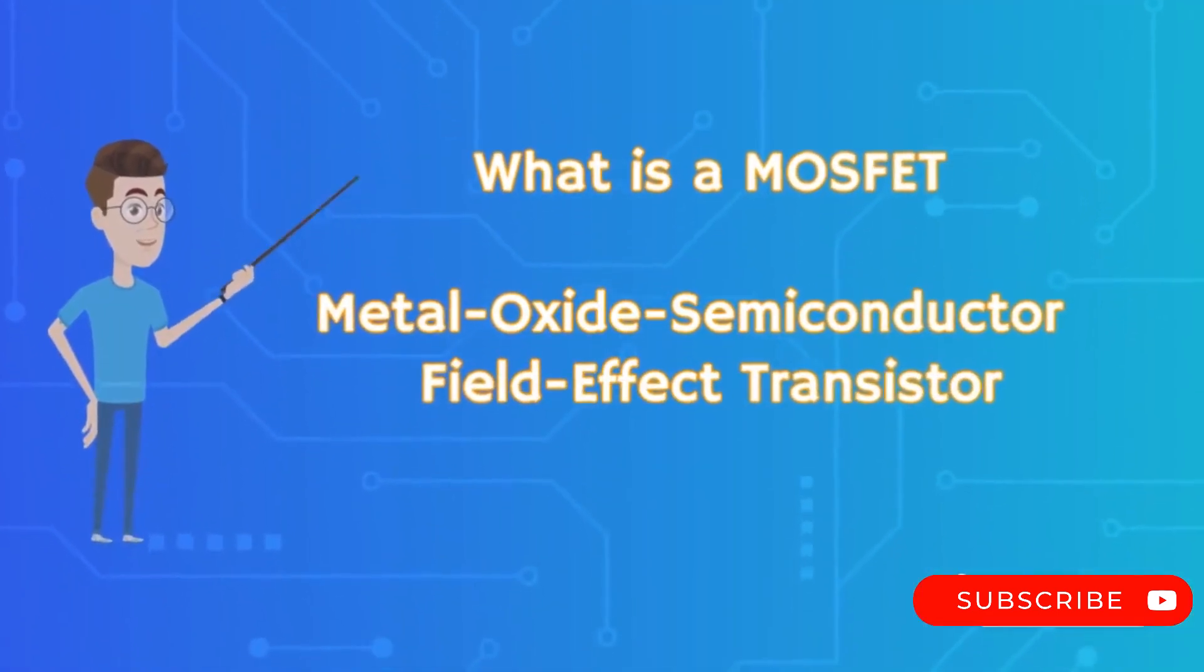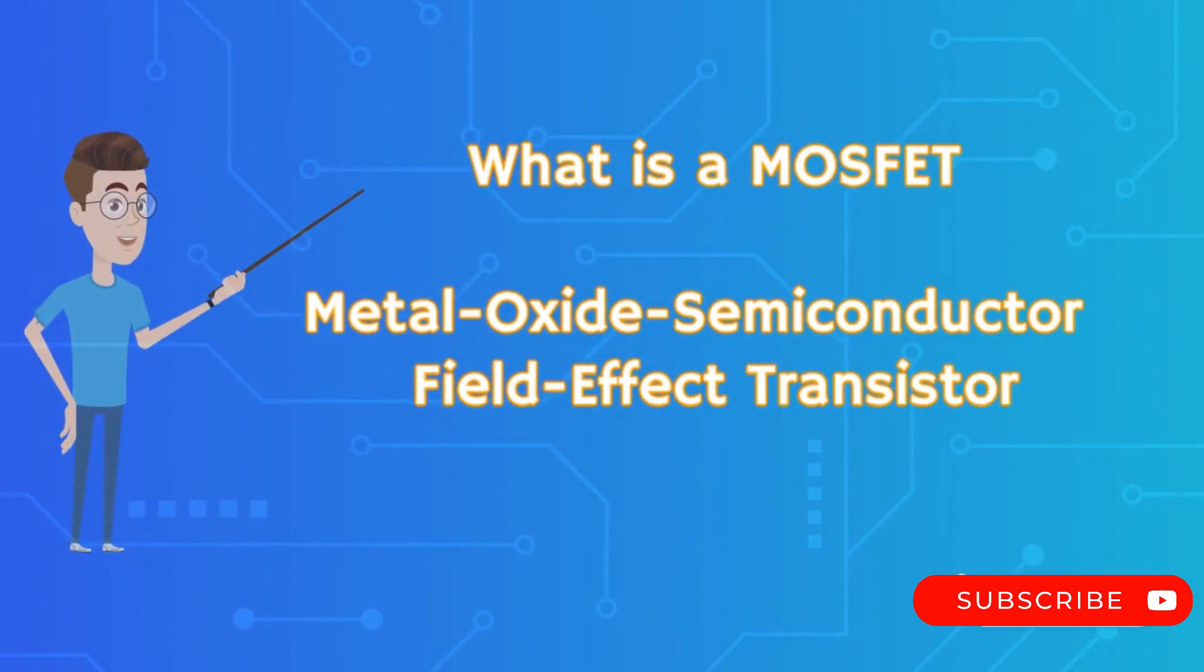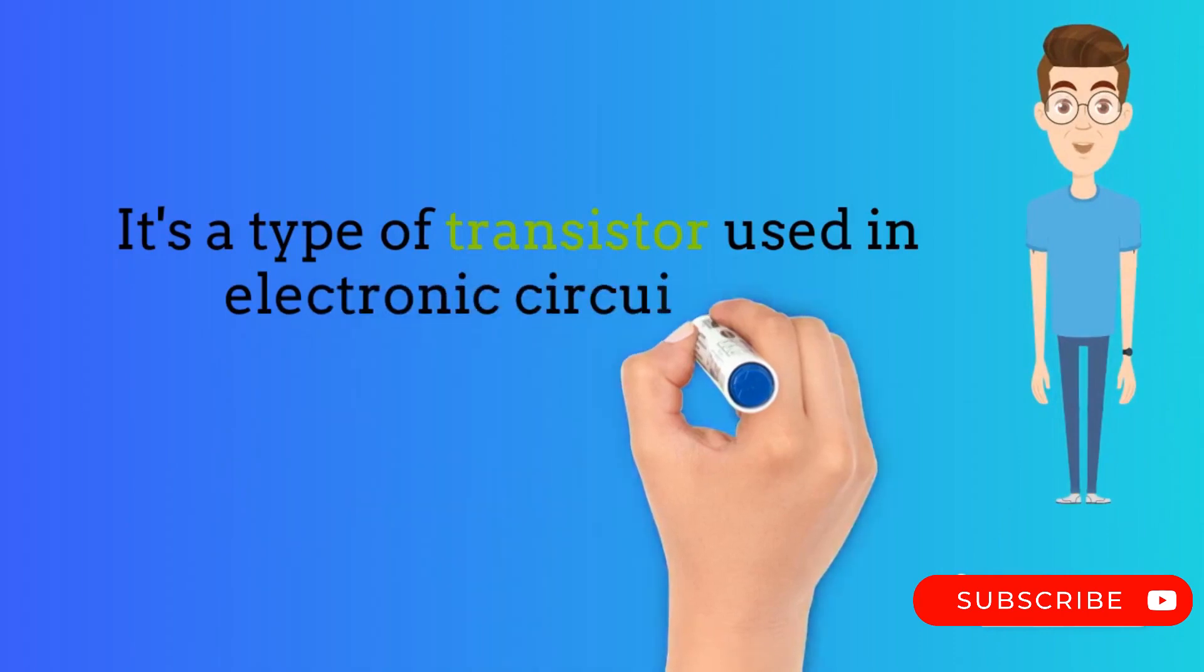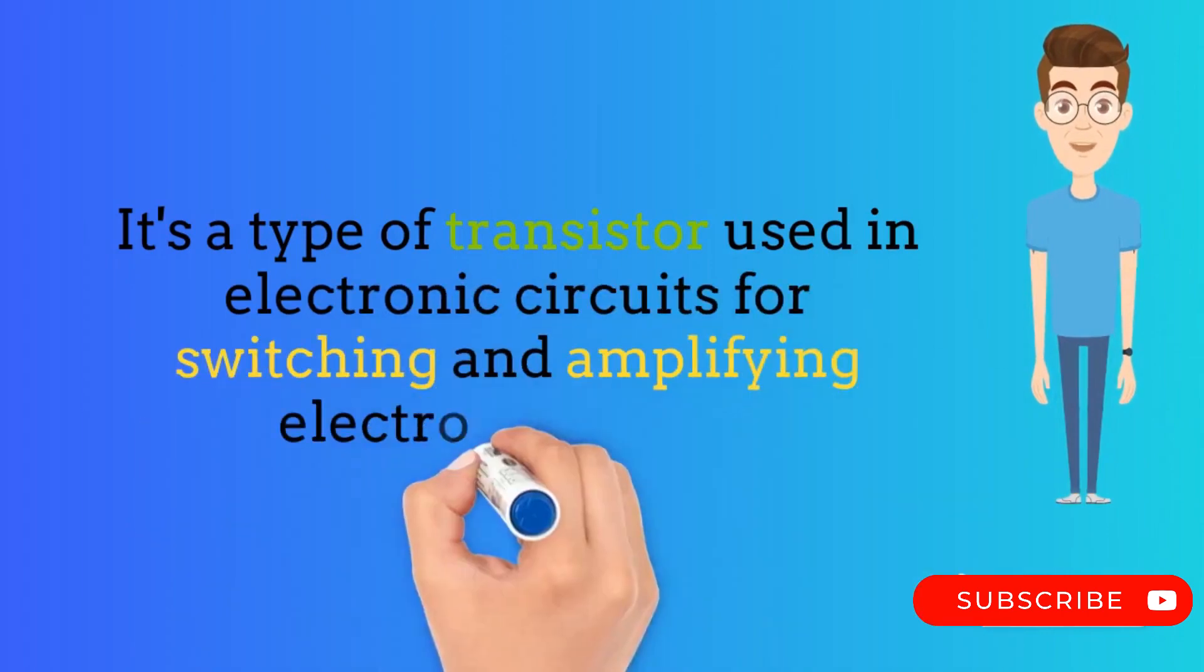First things first, what is a MOSFET transistor? MOSFET stands for Metal Oxide Semiconductor Field Effect Transistor. It's a type of transistor used in electronic circuits for switching and amplifying electronic signals.